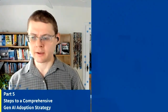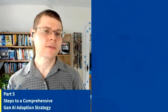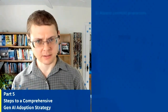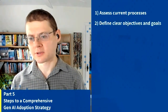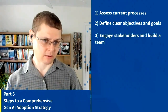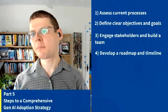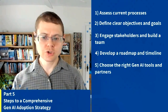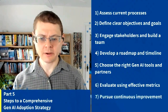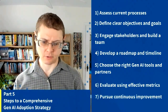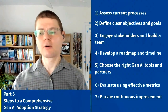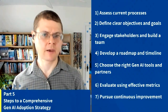What about how to integrate generative AI? Here are the steps to a comprehensive generative AI adoption strategy as we come to the last section: assess your current processes, define clear objectives and goals, engage with clear stakeholders and build up a team, develop a roadmap and a timeline, choose the right generative AI tools and partners, and evaluate using effective metrics and pursue continuous improvement. Those are the seven steps for a comprehensive generative AI adoption strategy.